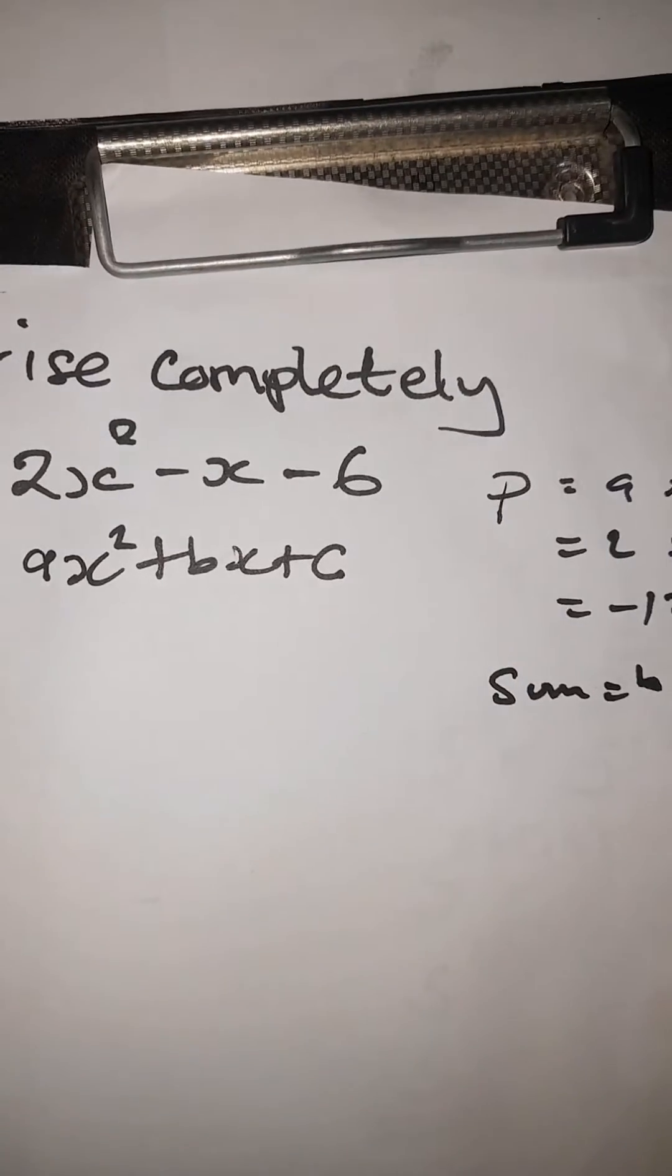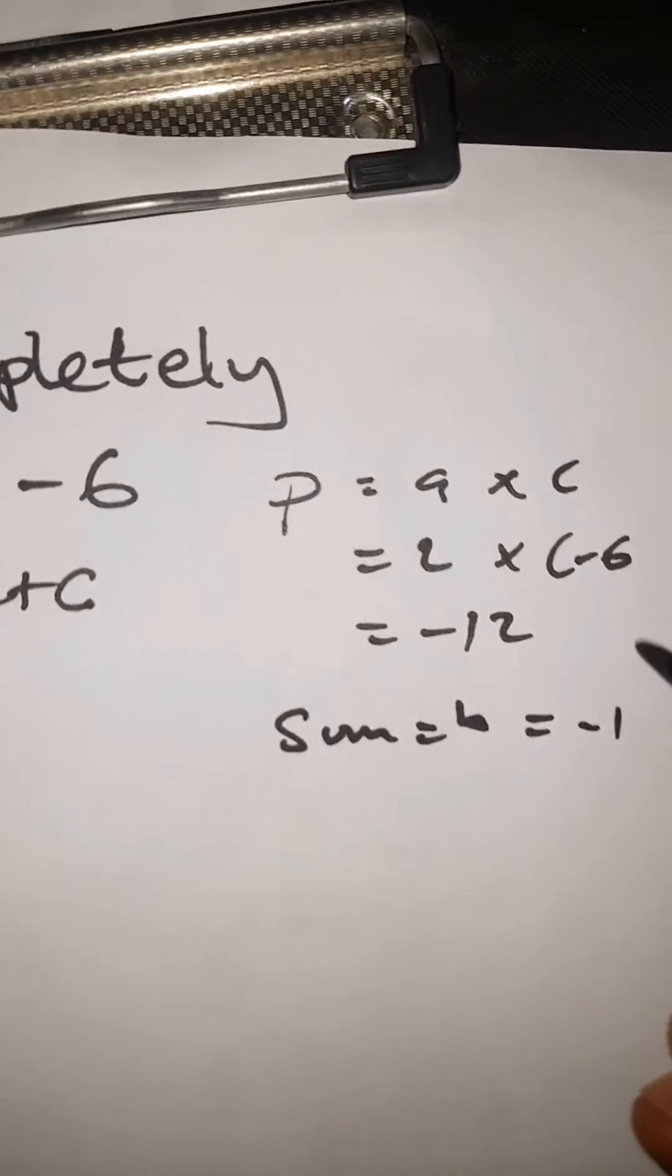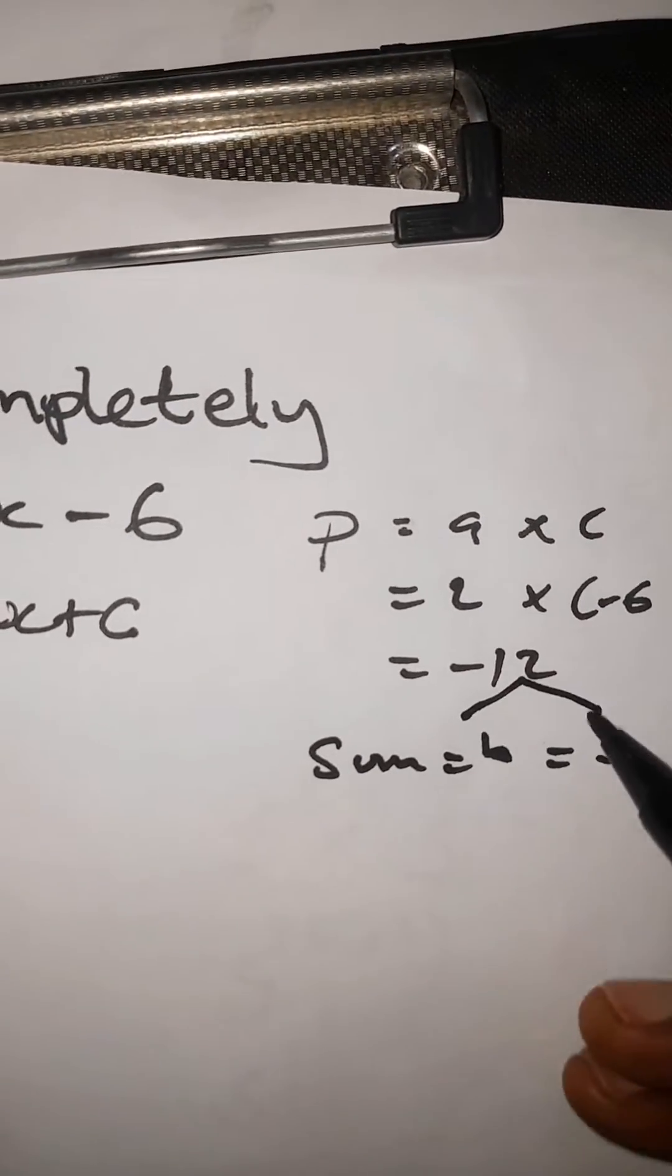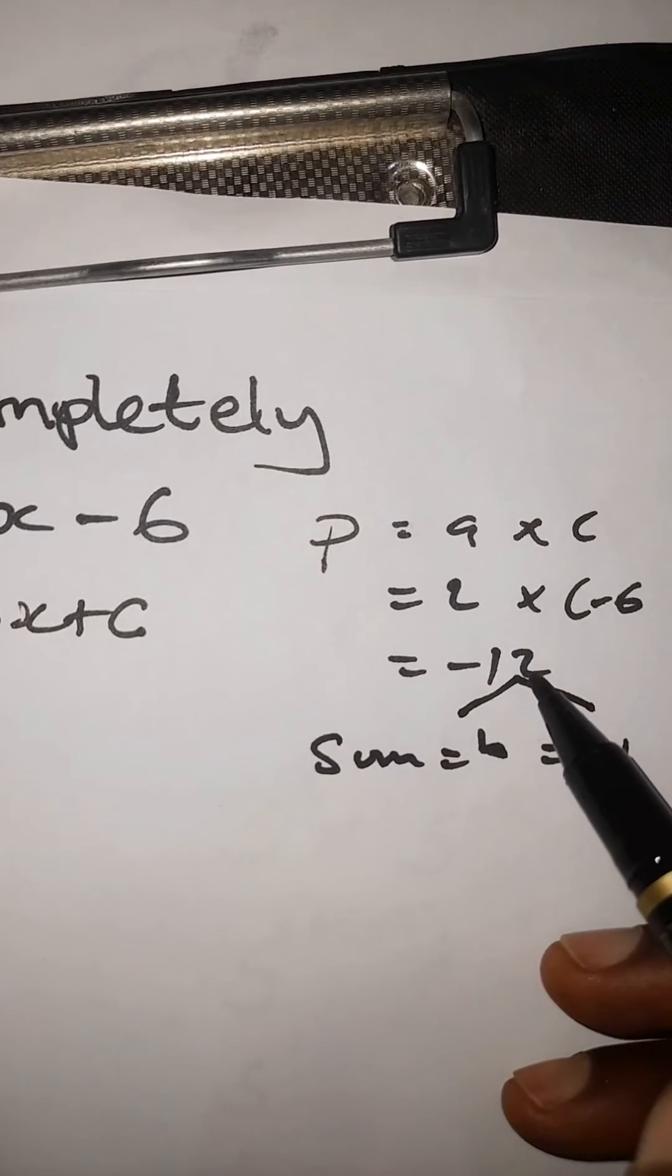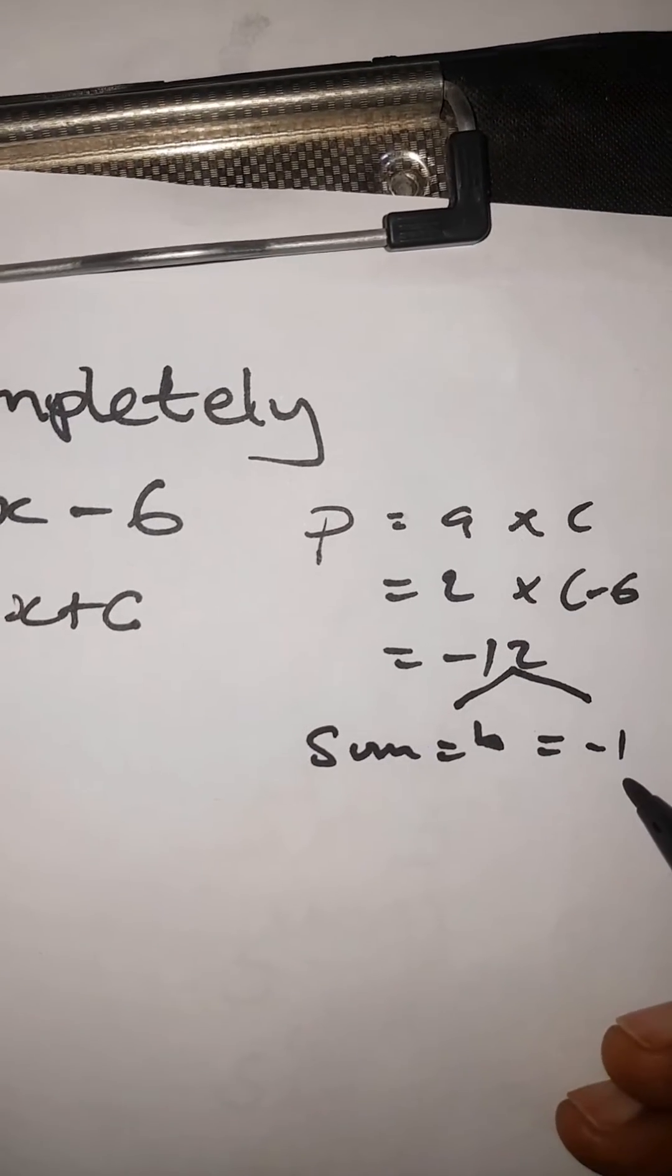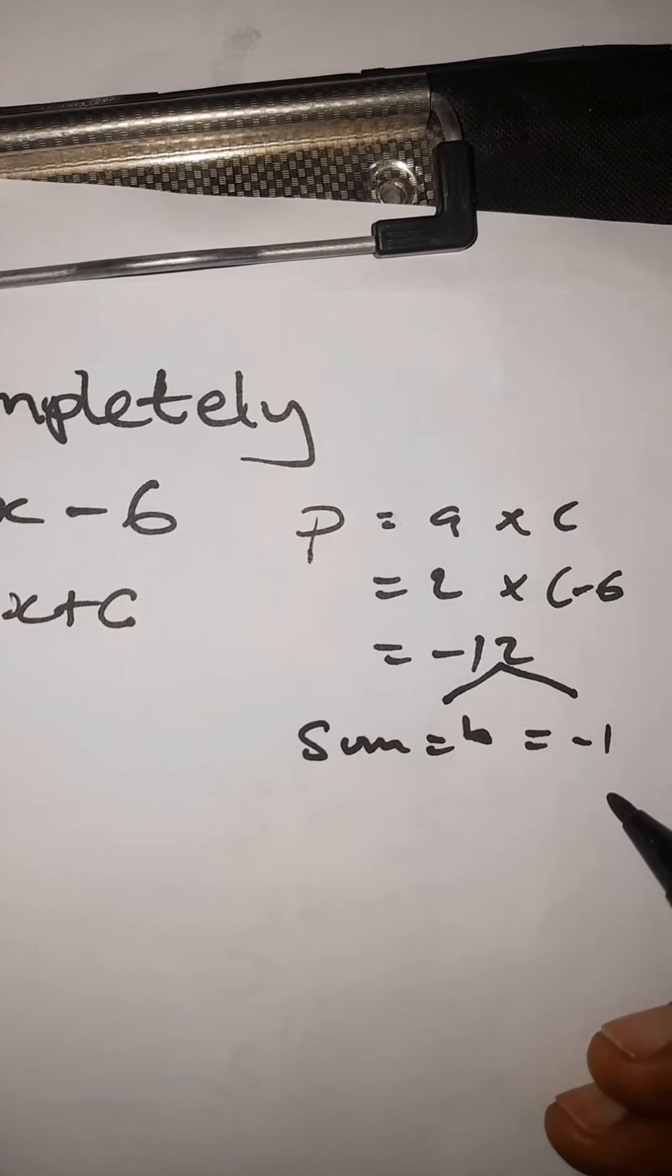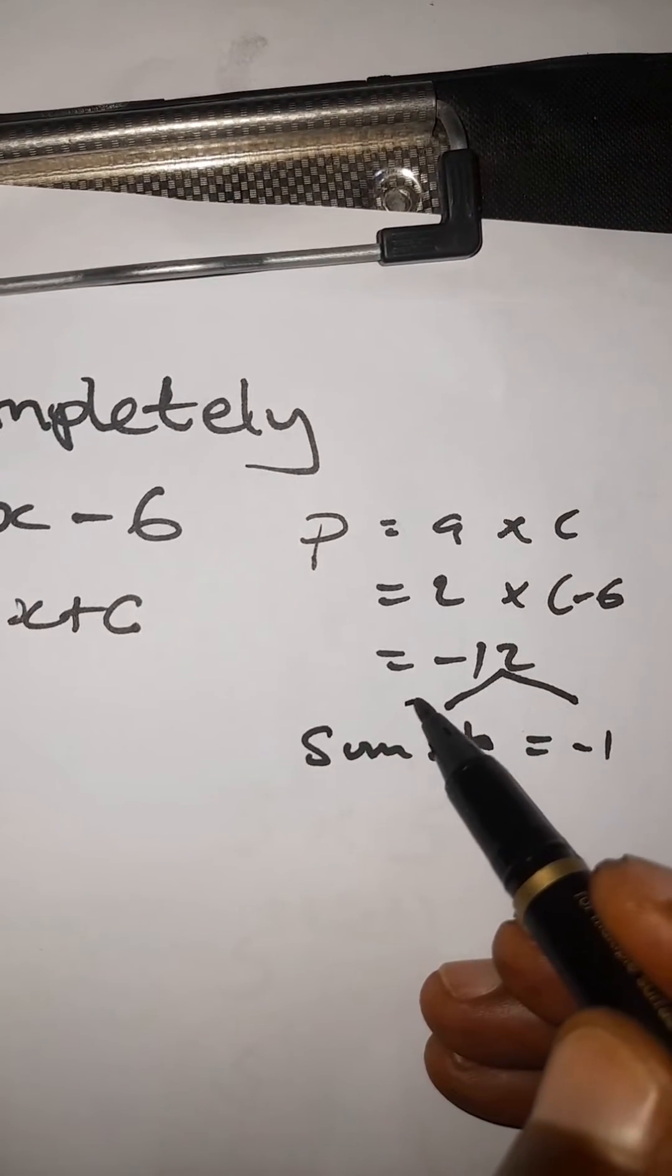We need to look for two factors of 12. When you multiply them, they should give us negative 12, and when you add them, they should give us negative 1.